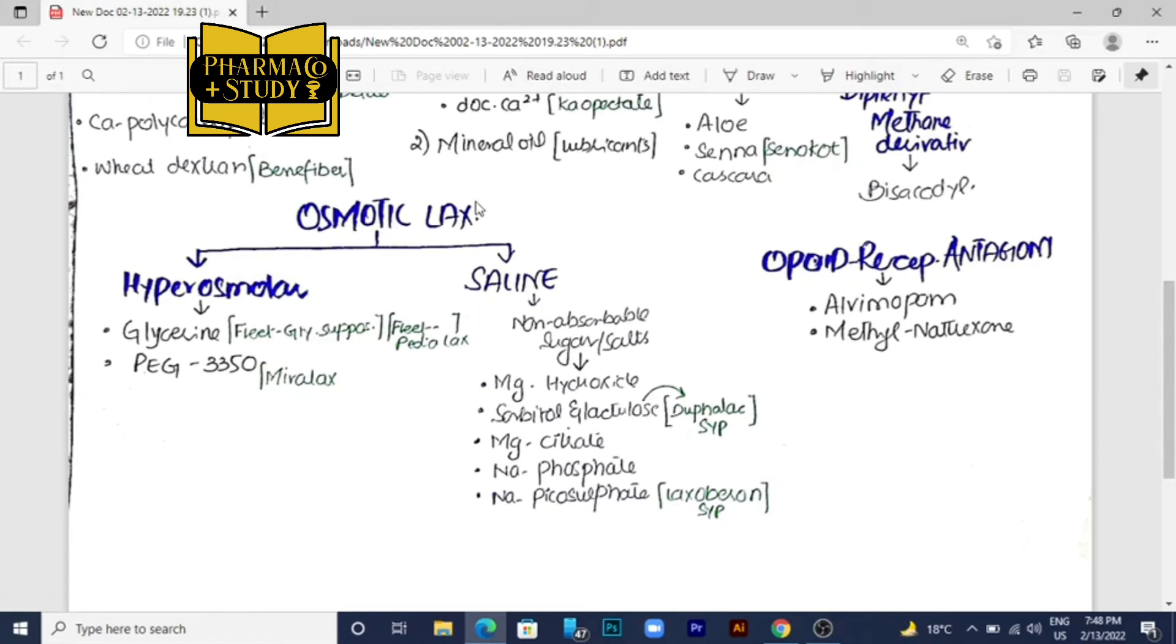Now the other class is the saline laxatives. These are non-absorbable sugars and salts. In this class we have many drugs: magnesium hydroxide, sorbitol, and lactulose. Lactulose is a very important drug given as OTC, and the brand name is Dufalac. Dufalac syrup is very important and many pharmacists and physicians recommend this syrup for treatment of constipation.